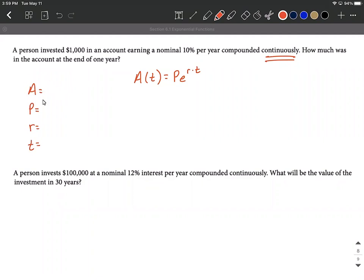Alright, we don't know the accumulated amount. That's what we're looking for, what it's going to be worth at the end of a year. We do know how much we started with. We invested $1,000. So $1,000 is going to get plugged in for P.